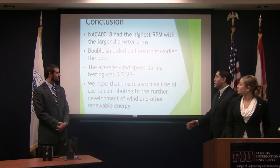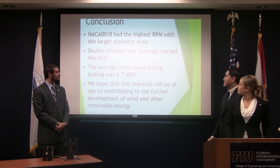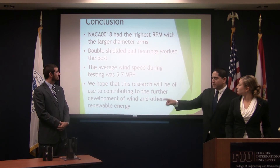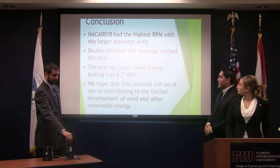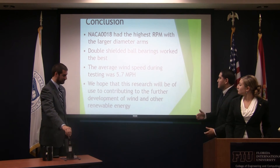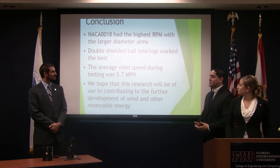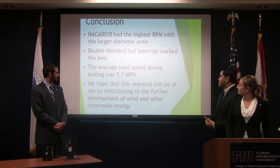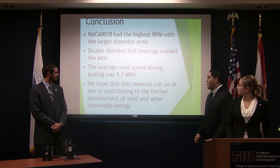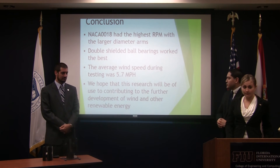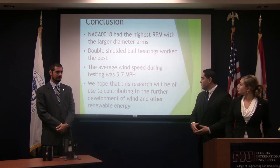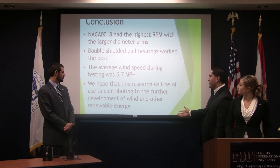For our conclusion, we concluded that NACA 0018 had the highest RPMs with the larger diameter arms. We also concluded that the double shielded ball bearings were the best. The average wind speed during the testing was 5.7 miles per hour, and we hope that this research will be of use contributing to further development of other renewable energy.